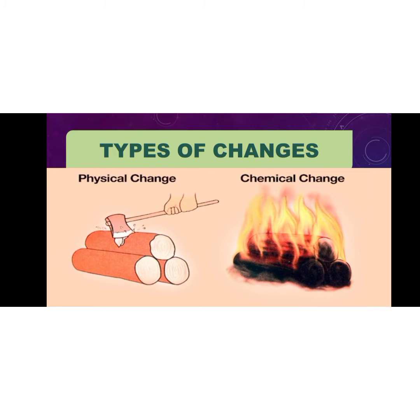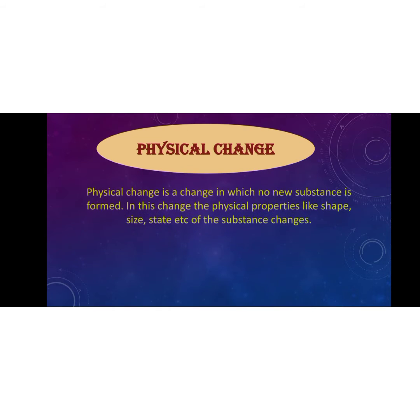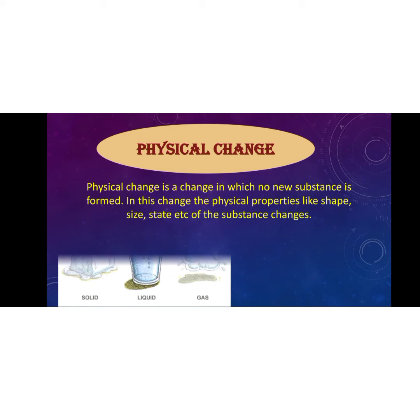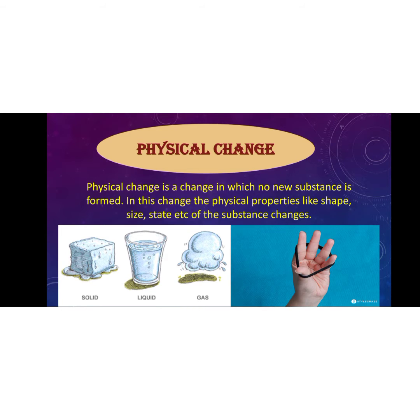There are two types of changes: physical change and chemical change. A physical change is a change in which no new substance is formed. In this change, the physical properties like shape, size, and state of the substances change. Here are some examples.